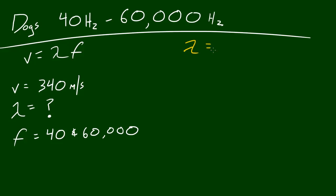Rewritten, the formula would be: wavelength equals velocity over frequency. Let's do one at a time. We'll start with the lower frequency, which is 40 Hertz or 40 vibrations per second. In order to figure this out, we'll set wavelength equal to velocity, which is 340, over 40. Once you cancel out all the units, you can see that the lower wavelength that a dog can perceive is 8.5 meters.